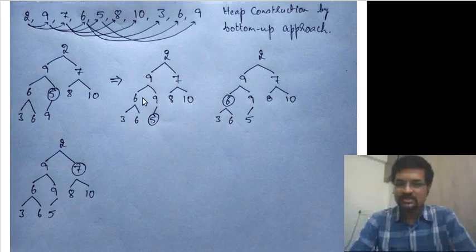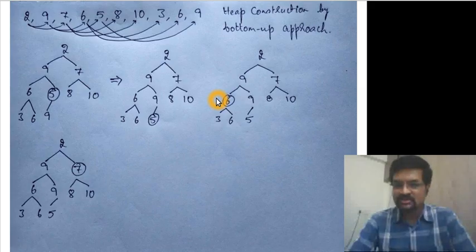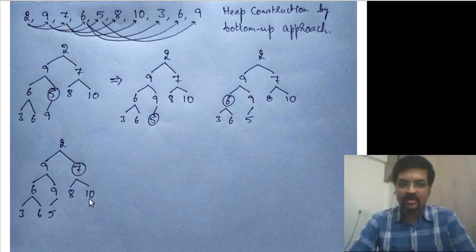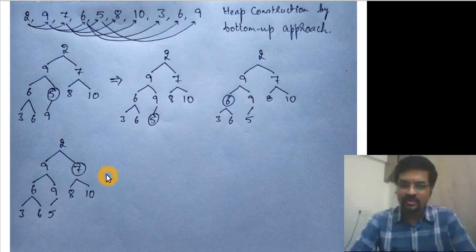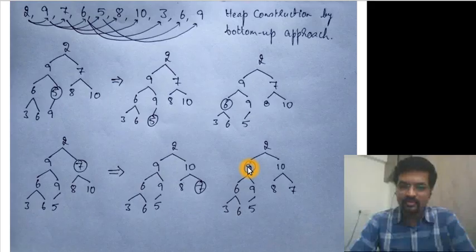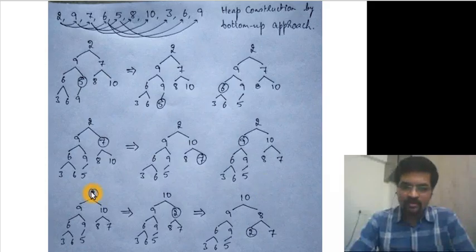The next node to process is 6, which is already at least as large as its children, so the subtree starting from this node is already a heap. The next one we process is the subtree starting from 7 — it is not a heap because the larger child is greater than this node. We pull that larger child up and 7 goes down to its place. Now the subtree starting from here is a heap.